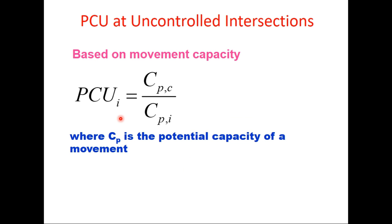PCU based on movement capacity is also suggested at uncontrolled intersections by some researchers. Movement capacity refers to any priority movement at an uncontrolled intersection. The potential capacity is determined in terms of passenger cars and in terms of vehicle type I, and the ratio of these two gives the PCU for vehicle type I.